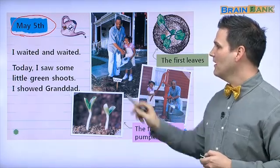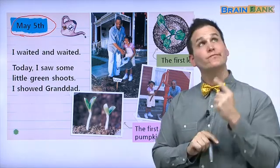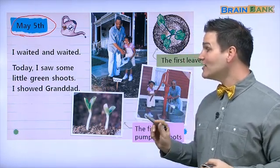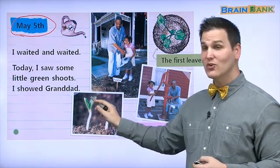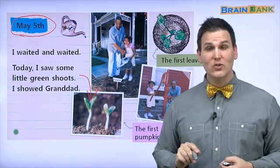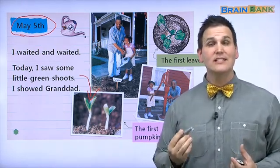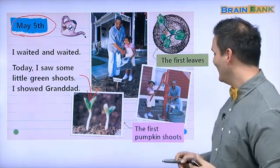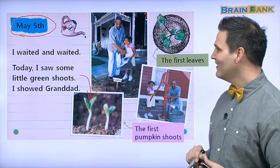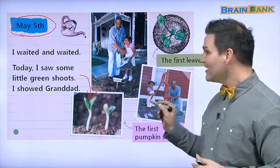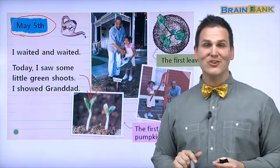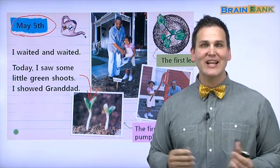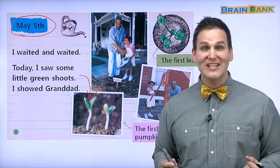I waited and waited. Why aren't my pumpkins growing? Today, I saw some little green shoots. I showed granddad. These are little green shoots — seesak in Korean. The pumpkin plant is growing. Wow — the first pumpkin shoots! This is pretty exciting, all from the little seeds. We're going to finish with section one. Come back in section two and let's find out the growth of these pumpkins. I'll see you soon.